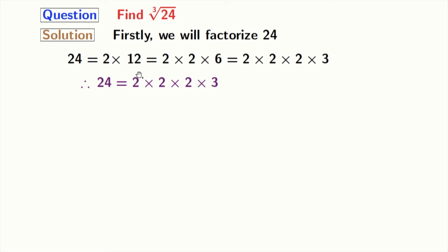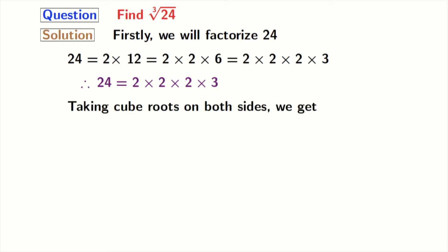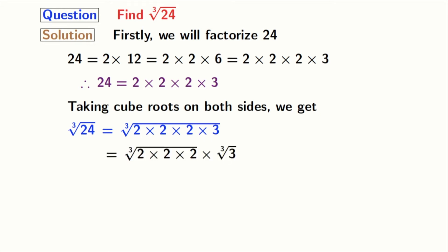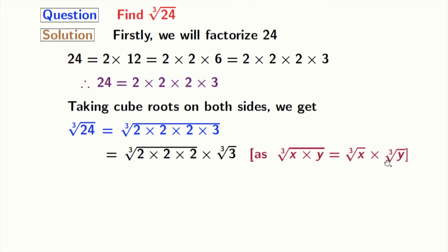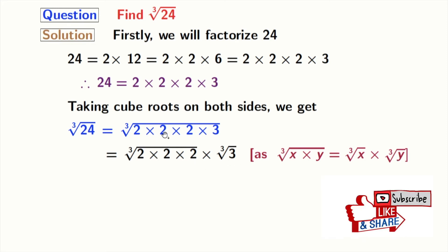Now taking cube root on both sides, we get cube root of 24 is equal to cube root of 2 times 2 times 2 times 3. After grouping, we get cube root of 2 times 2 times 2, times cube root of 3. Here we have used the rule that cube root of x times y is equal to cube root of x times cube root of y, where x is 2 times 2 times 2 and y is 3.